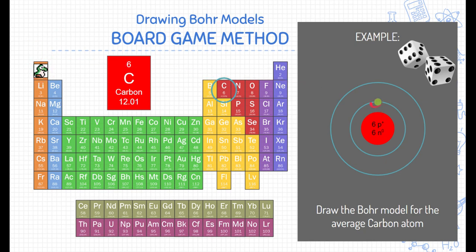When I do that, I'm going to draw an electron on the very first, innermost, lowest energy ring of the Bohr model of carbon. Now I'm going to move my pawn over to the second square in order. Notice that that's in the same row, so I'm going to draw another electron in that very first energy level of the Bohr model for carbon.